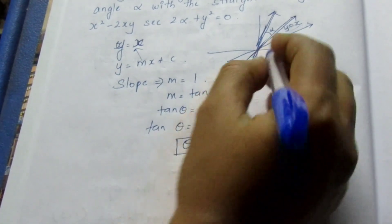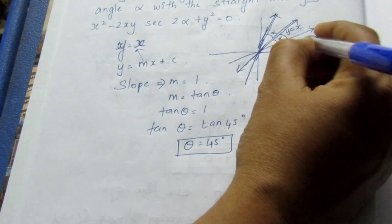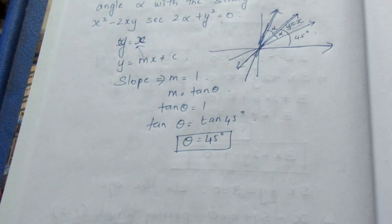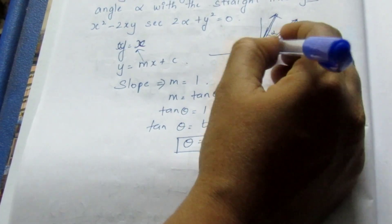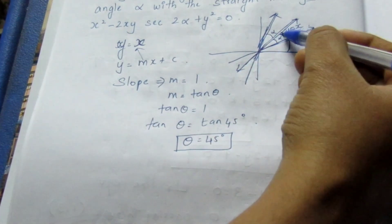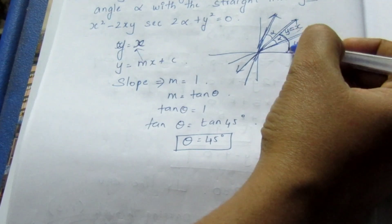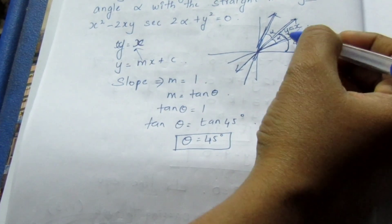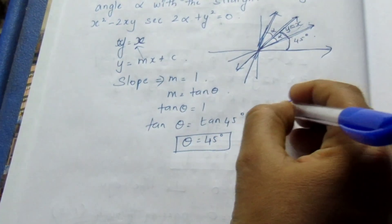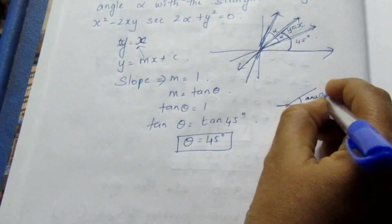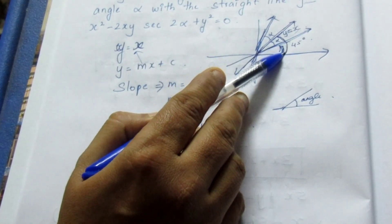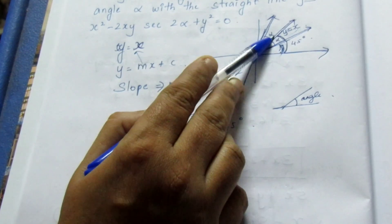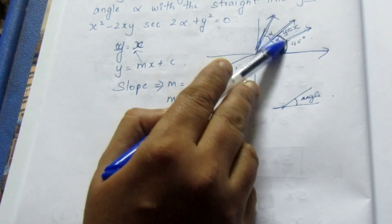Since y = x makes a 45° angle, and our two lines each make an angle alpha with y = x, line L1 makes an angle of (45 - α) with the x-axis, and line L2 makes an angle of (45 + α) with the x-axis. So the slope M1 corresponds to angle (45 - α) and slope M2 corresponds to angle (45 + α).